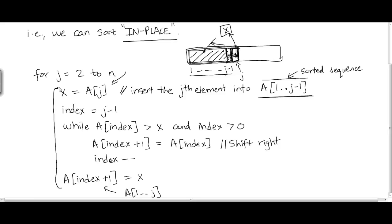Let's first look at what's happening inside this for loop. The contents of the for loop are going to be executed approximately n-1 times, because we start with j equal to 2 and we end with j equal to n. So we'll be iterating through this loop n-1 times.